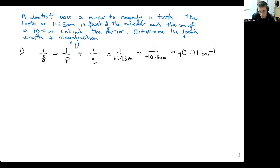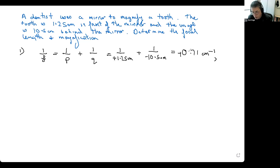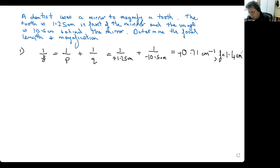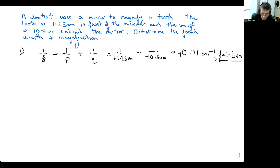The inverse of 1/F gives us the focal length: 1 over 0.71 inverse centimetres equals 1.4 centimetres, so F = +1.4 centimetres. That positive value makes sense — a converging concave mirror that can magnify has a positive focal length.